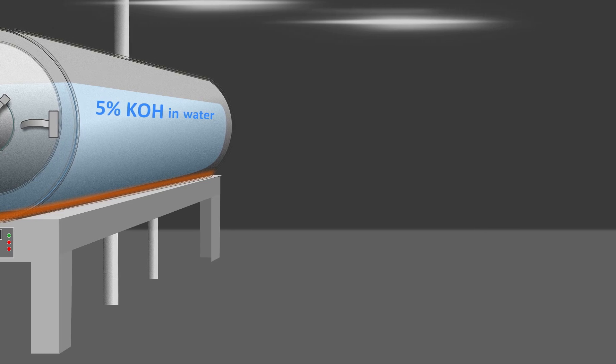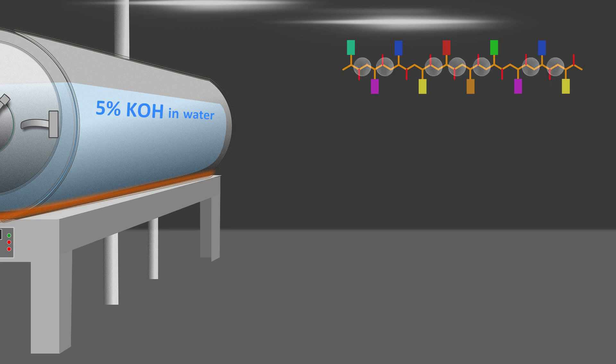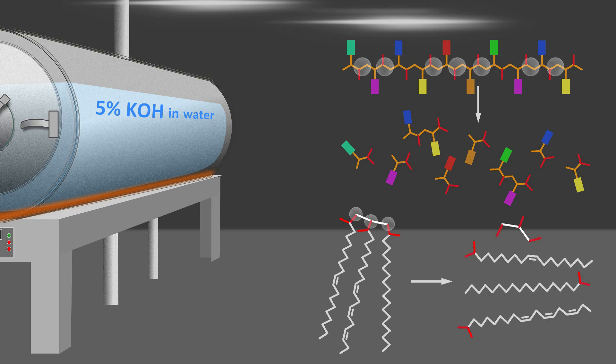The alkaline solution chemically reacts with the proteins in muscles, skin, bone, and other tissues. The peptide bonds are cleaved, giving amino acids and peptide fragments. The triglycerides of fat and the phospholipids of cell membranes are hydrolyzed, giving phosphate, glycerol, and fatty acid salts, or soap.